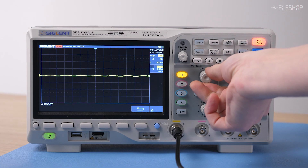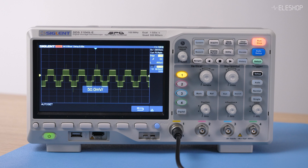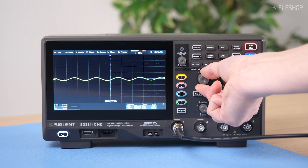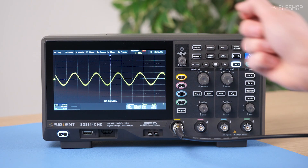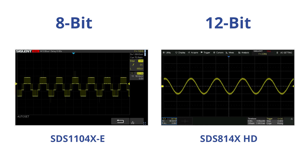Now let's pause the runtime and zoom in to 50 millivolts per division on both scopes. Here you can clearly see a significant difference. The 12-bit oscilloscope shows a much clearer signal with better resolution, while the signal on the 8-bit oscilloscope doesn't even look like a sine wave anymore.